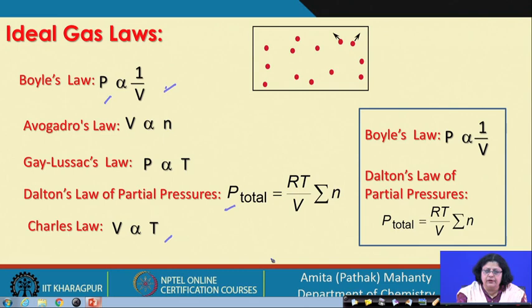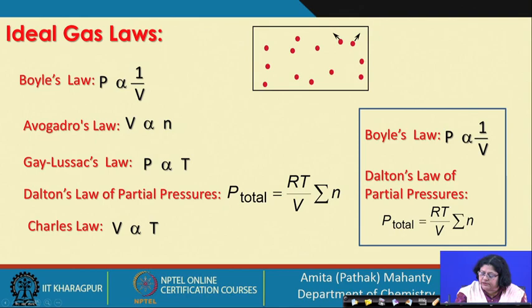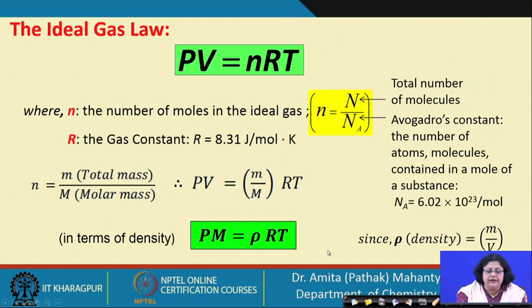What we will look at through the kinetic theory model is how we interpret the macroscopic observations in terms of results derived from the law. To begin, we start with these laws and come up to the ideal gas law equation: PV = nRT.